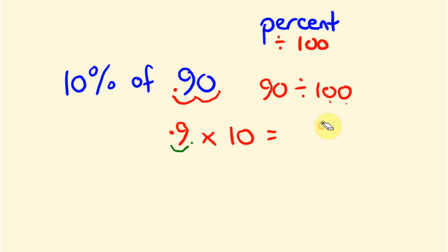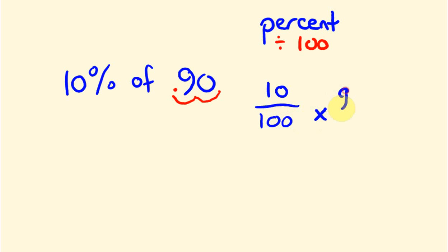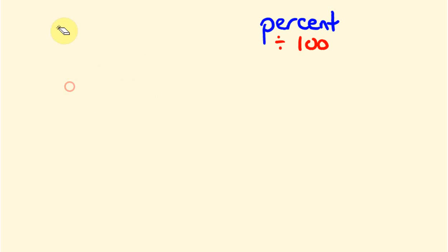How would you write this out the standard way? You might write this as 10 over 100 times 90 over 1. What you did is 10 times 90 is 900 and 100 times 1 is 100. So 900 divided by 100 equals 9, the same answer. I think it's really handy that you can do this with the numbers, that you can approach exactly the same question in different ways.